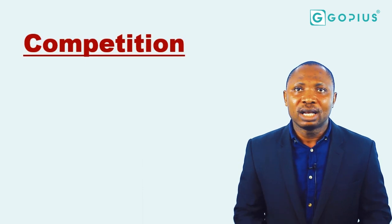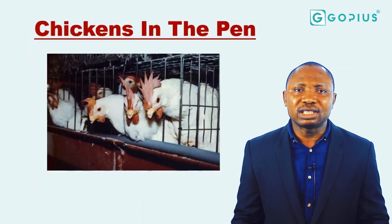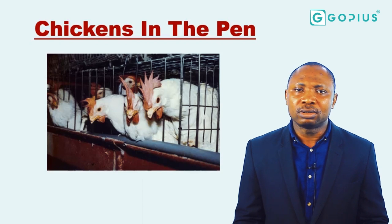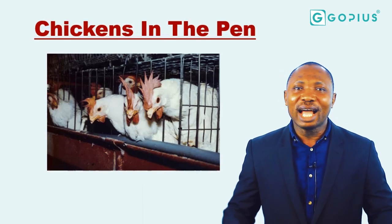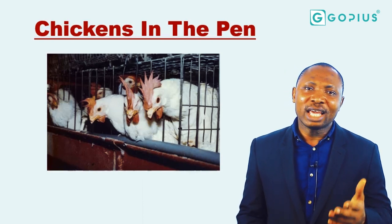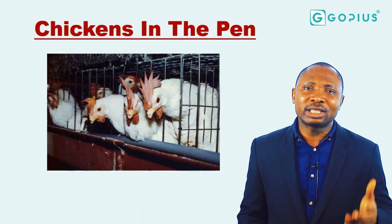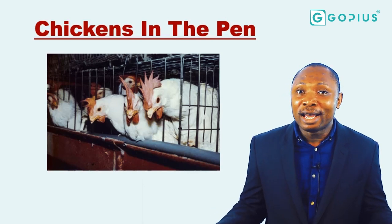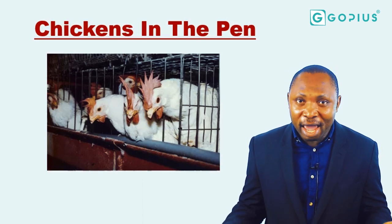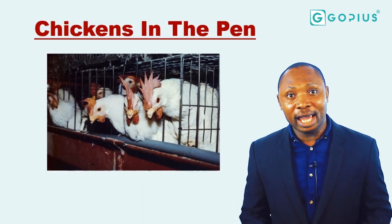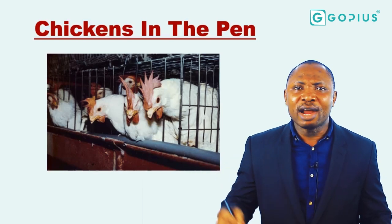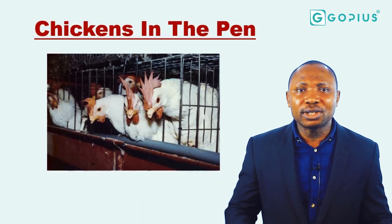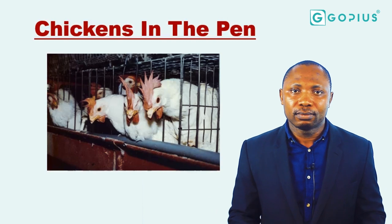A typical example of intraspecific competition is chickens in a pen — they are all of the same species. Whenever a food particle is dropped in their midst, they begin to struggle for that food resource. In the case of a larger adult chicken with a chick, the adult chicken feeds first before leaving the rest for the chick, which can eventually lead to the starvation and death of the chick.